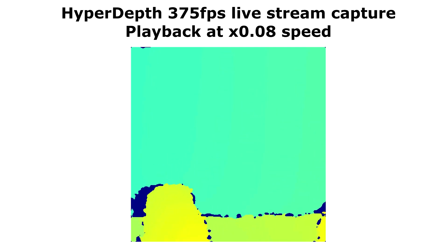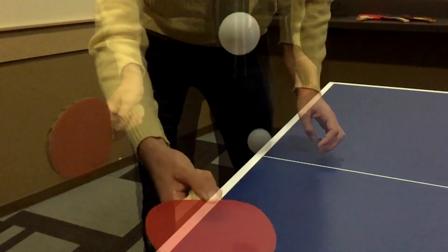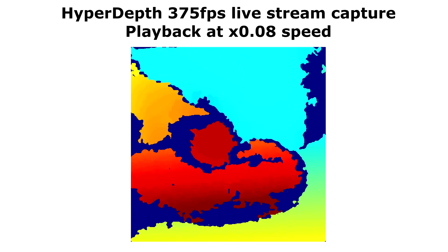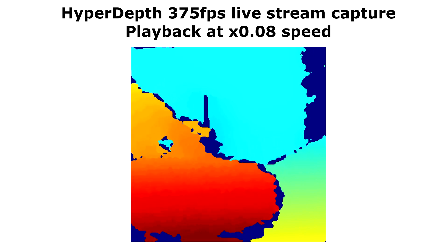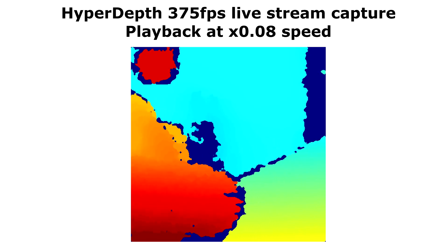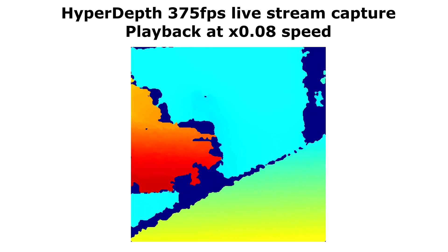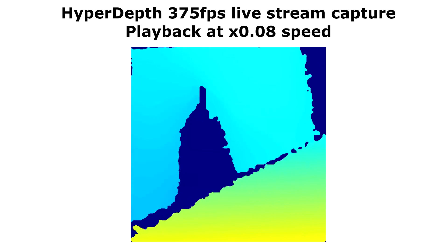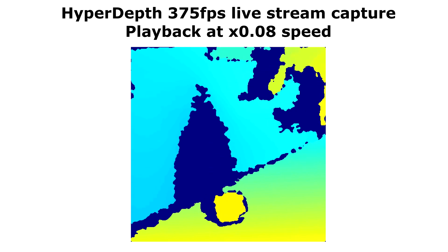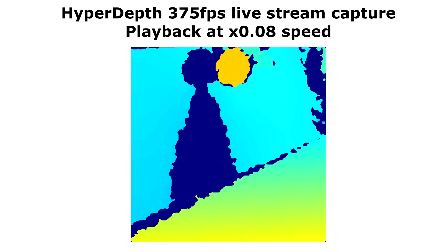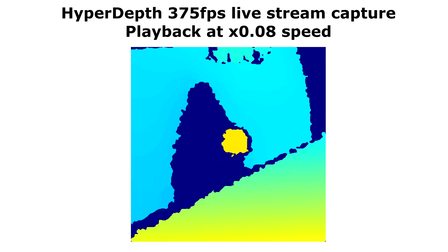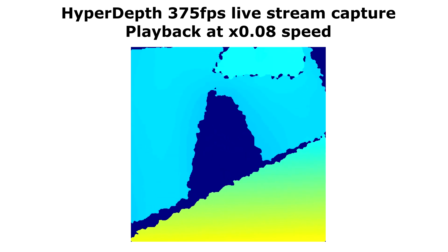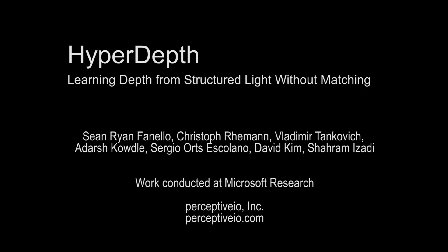Here we show some high-speed sequences captured using our system. Note that due to the very short exposure time of the camera and our use of a diffractive optical element from the Kinect, this reduces the signal-to-noise ratio of the captured infrared images and hence the final depth map quality is lower than our higher quality system. However, this still shows the potential for the HyperDepth algorithm to be used in new types of camera technologies that support high-speed tracking as well as higher quality reconstruction.